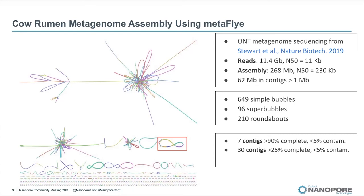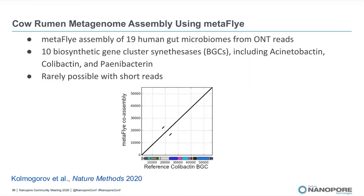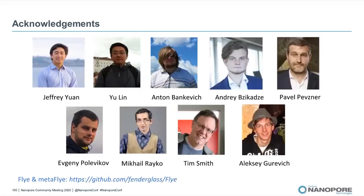Another interesting result is that we were able to recover complete biosynthetic gene clusters from metagenomic assemblies. Some of these gene clusters encode important natural products, such as naturally produced antibiotics, and these clusters can rarely be reconstructed using short reads. With that, I'd like to thank all the people who contributed to the development of Flye and MetaFlye and to the analysis of the results. I will be happy to take any questions. Thank you.